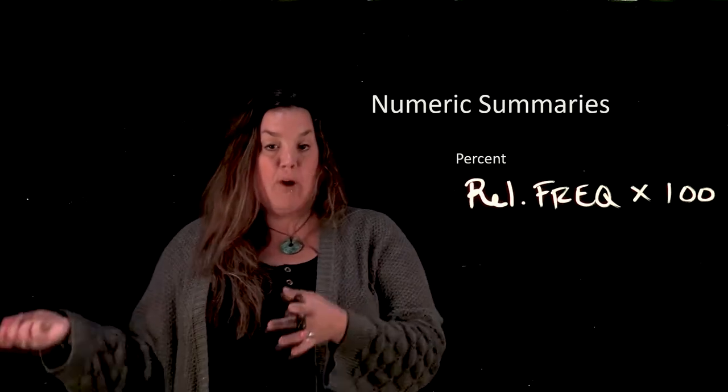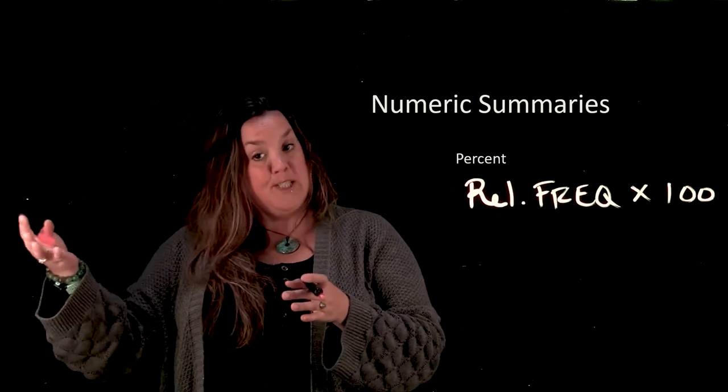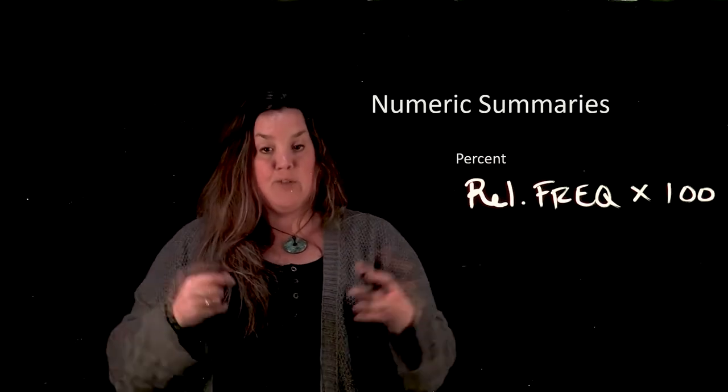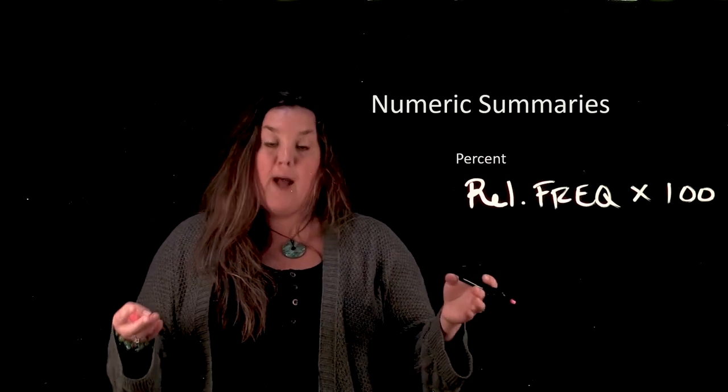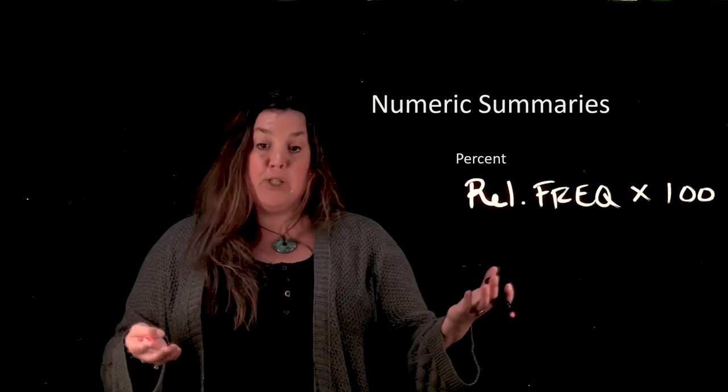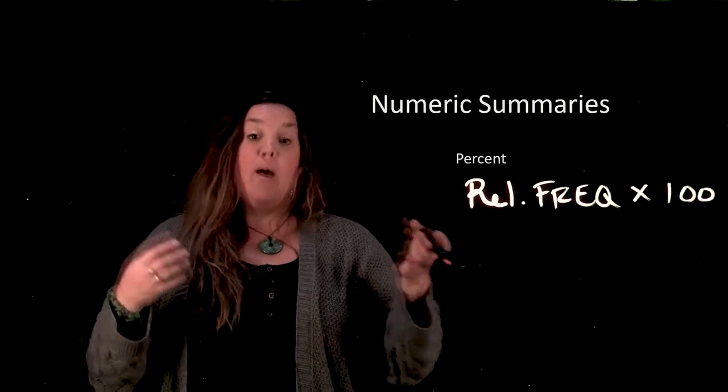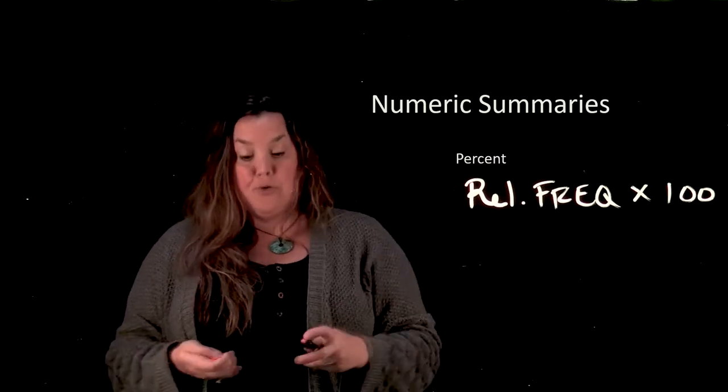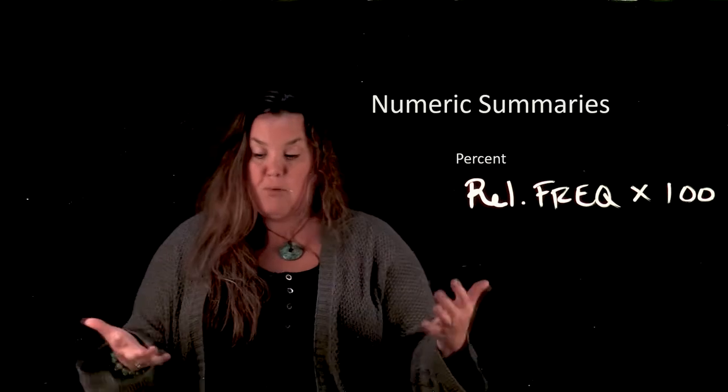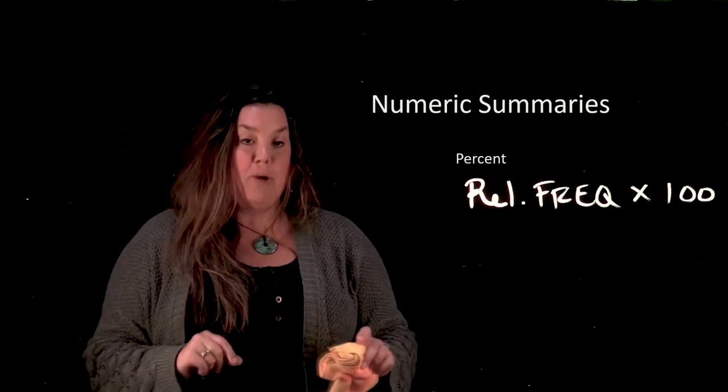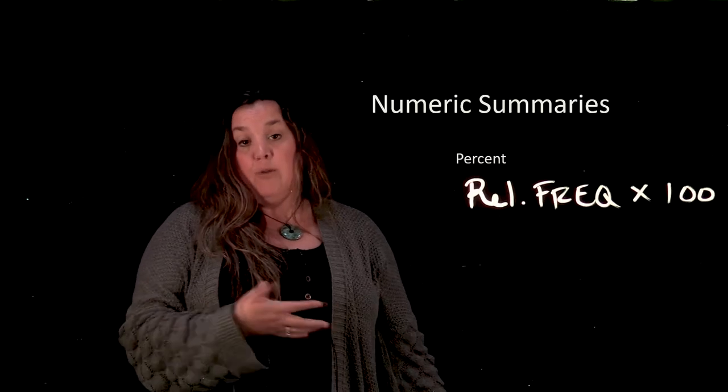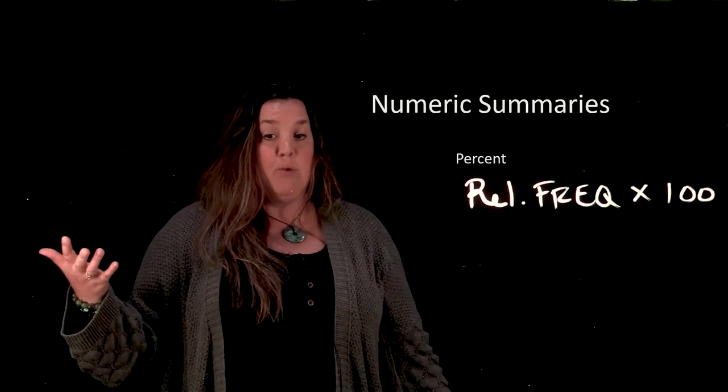Just like before, frequency has to be a whole number, and relative frequency has to be between 0 and 1. A percentage then would have to be between 0 and 100 percent. Those are the rules for that, kind of helps you to have some parameters to guide yourself by. Those are the numeric summaries for categorical data, and those are the only numeric summaries we can do.